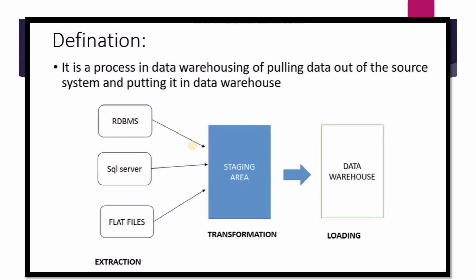In the first step we perform extraction of the data, in the second step we do transformation of the data, and in the third step we do loading of the data. In ETL we extract data from different sources, do some transformation on that extracted data, and then load it into our data warehouses. The data may come from any RDBMS like SQL Server, or from flat files such as CSV, PSV, Parquet, or JSON. Transformation happens in the staging area, after which the manipulated data is loaded into the data warehouse.